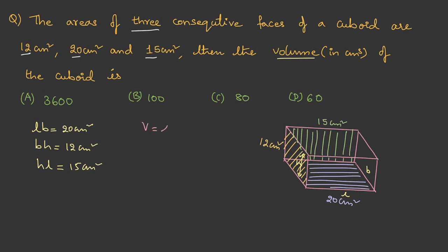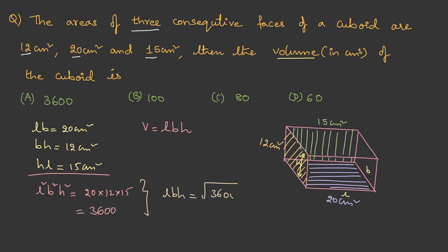We know volume is LBH. To find this, we multiply all three face areas: L²B²H² = 20 × 12 × 15 = 3600. Therefore LBH = √3600 = 60. So the volume is 60 cm³, which is option D.